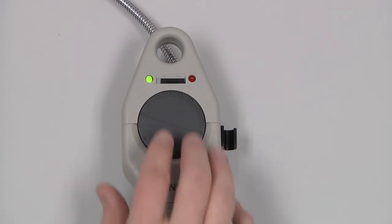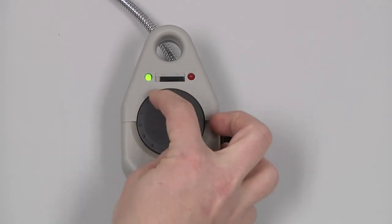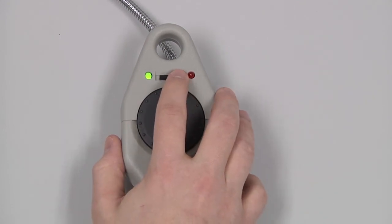To power off the instrument, turn the tick wheel fully counterclockwise and slide the switch to the left.